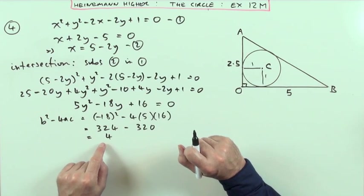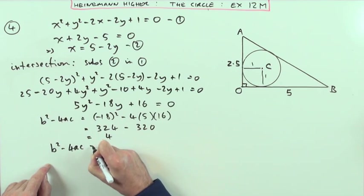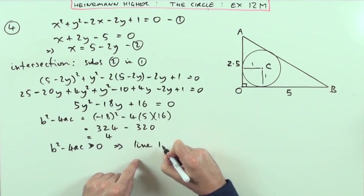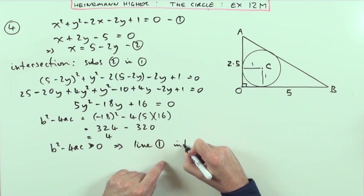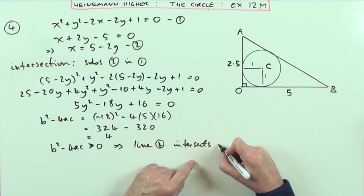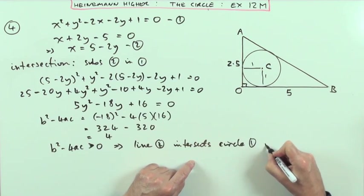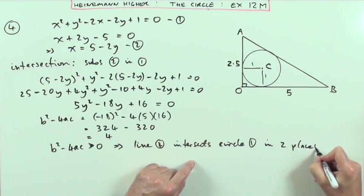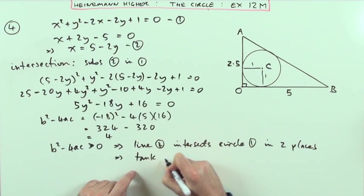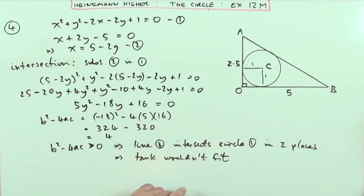But that's not the main concern. The main concern is you are going to have answers. So the statement would be: b² minus 4ac is greater than 0, which means that line 1 intersects circle 1 in 2 places, which means that the tank wouldn't fit there.